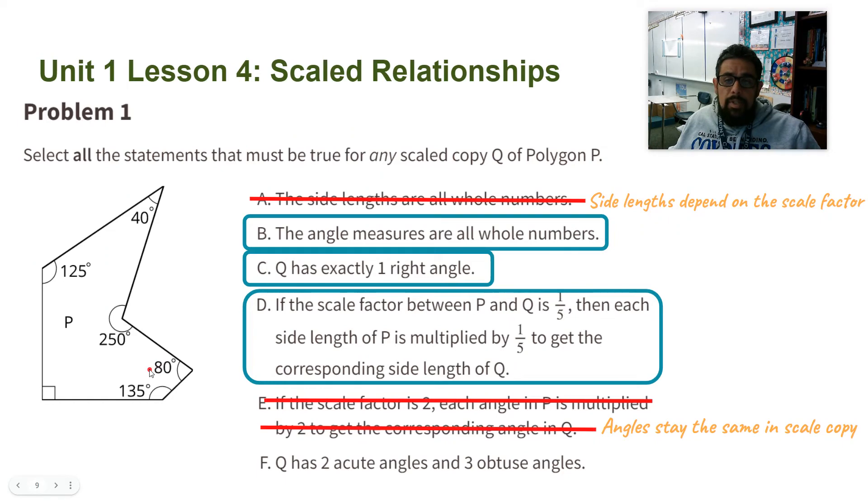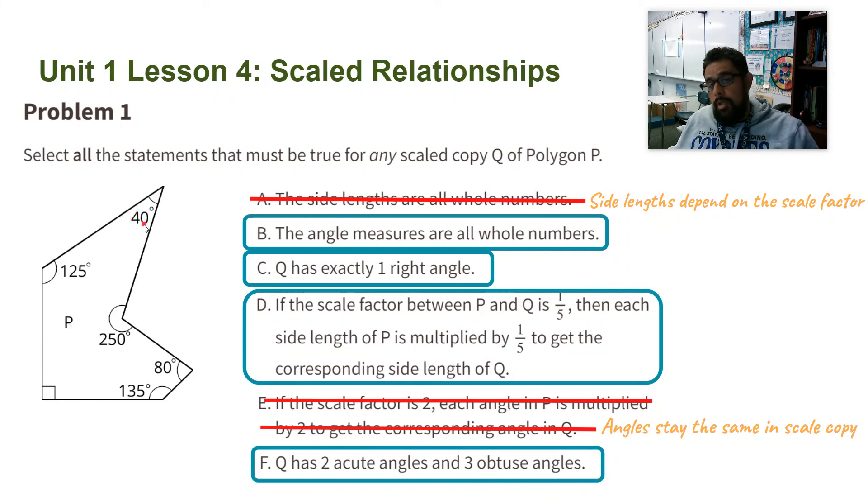Part F: Q has two acute angles and three obtuse angles. Let's look at the original: one, two acute angles, and one, two, three obtuse angles. Yes, that is true. I looked at P, the original. Remember, the angles stay the same, so if they're acute here, they will also be acute in the copy. If it's obtuse, it will also be obtuse in the copy.